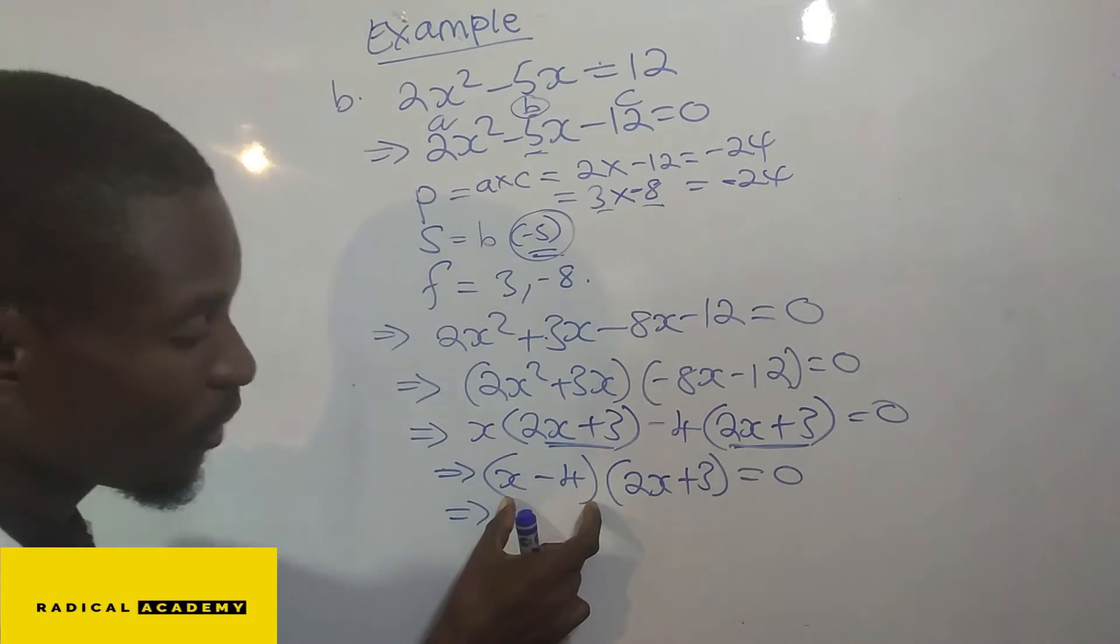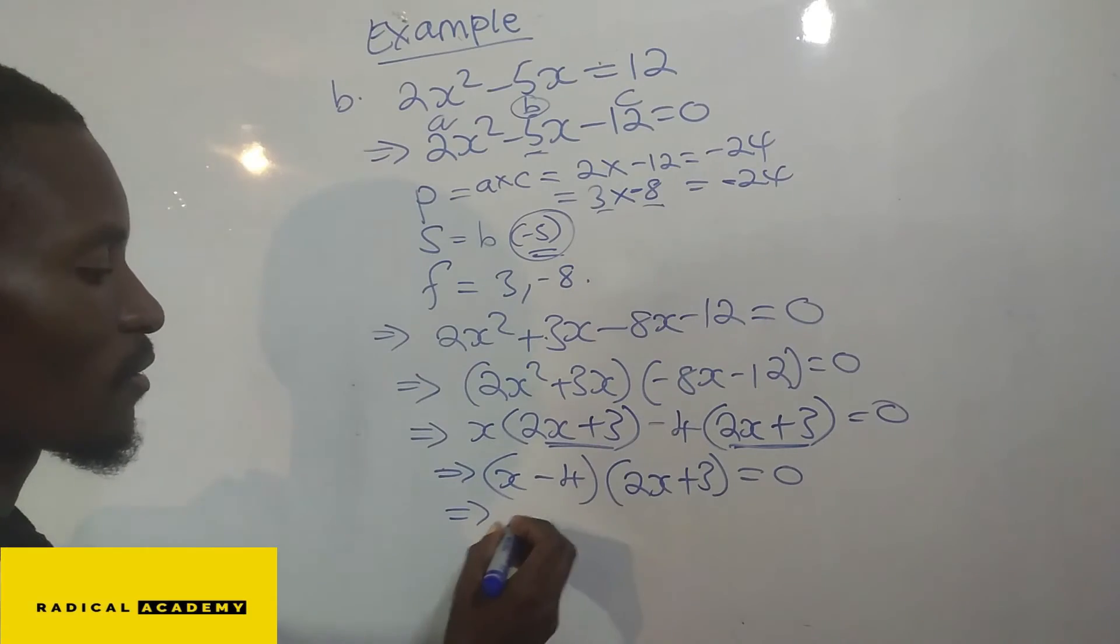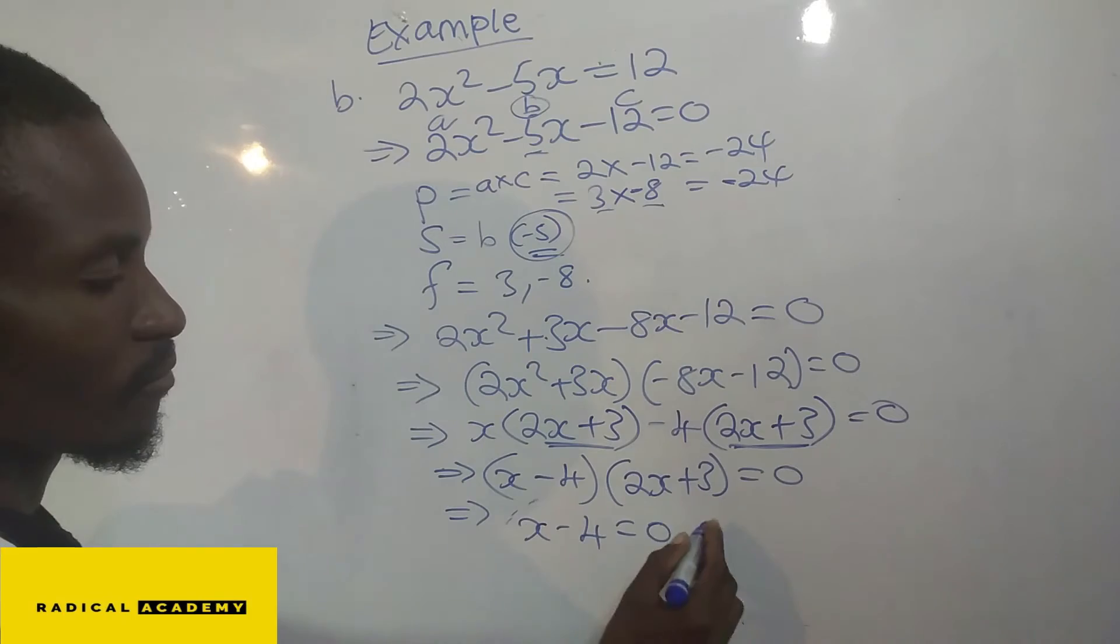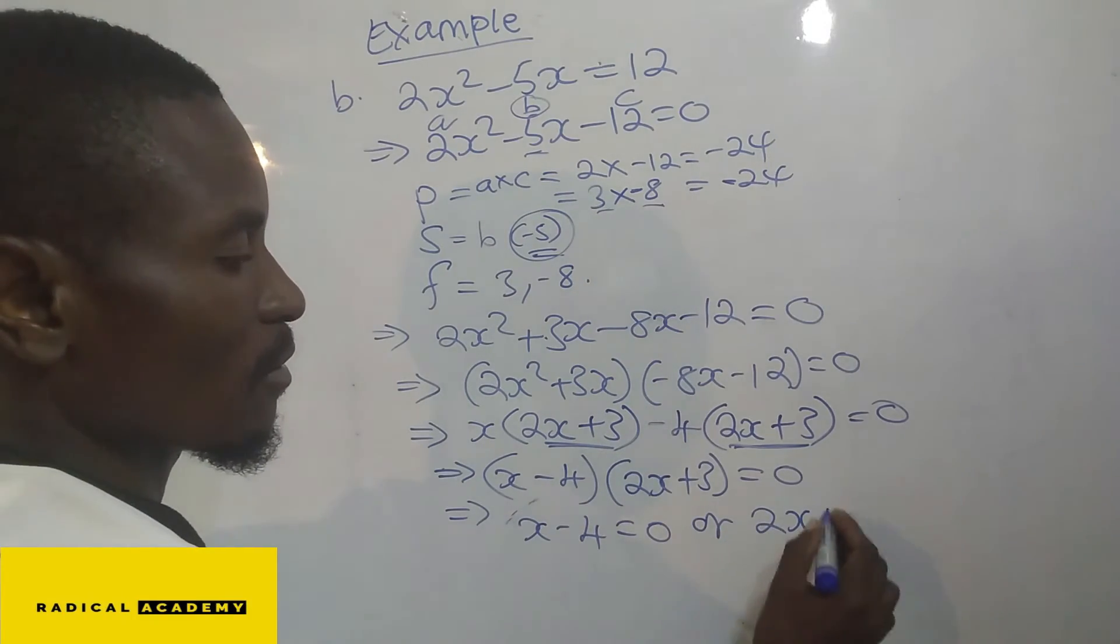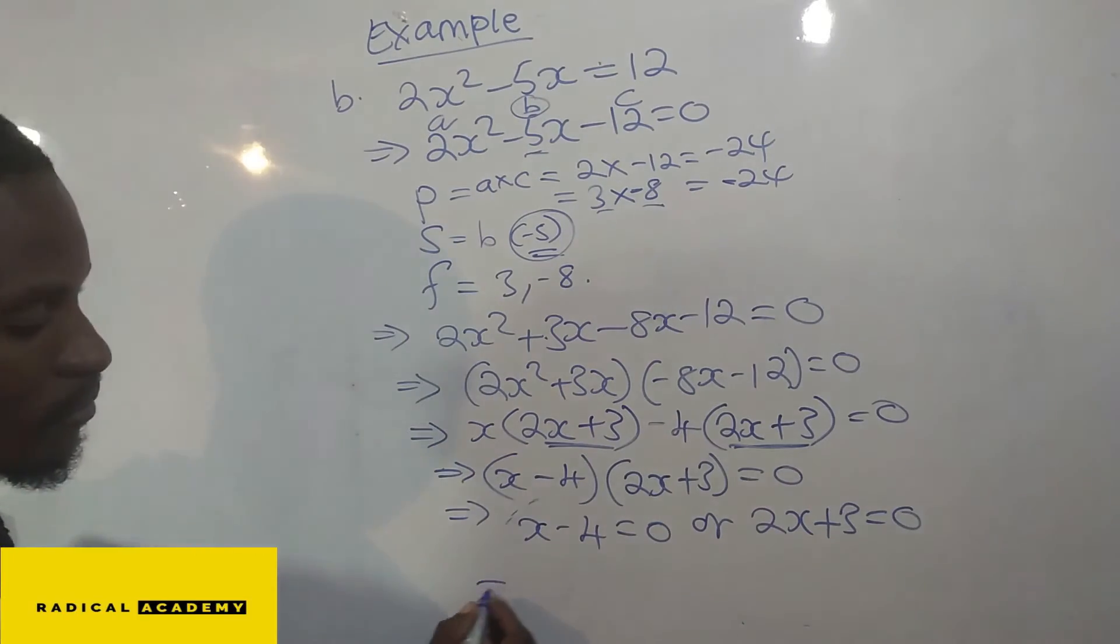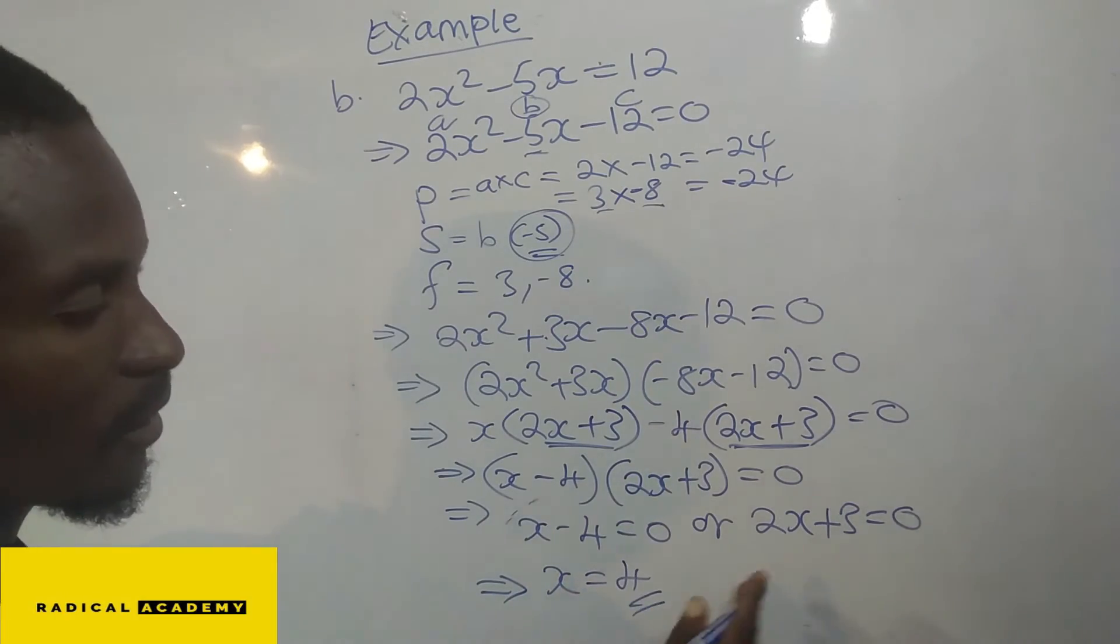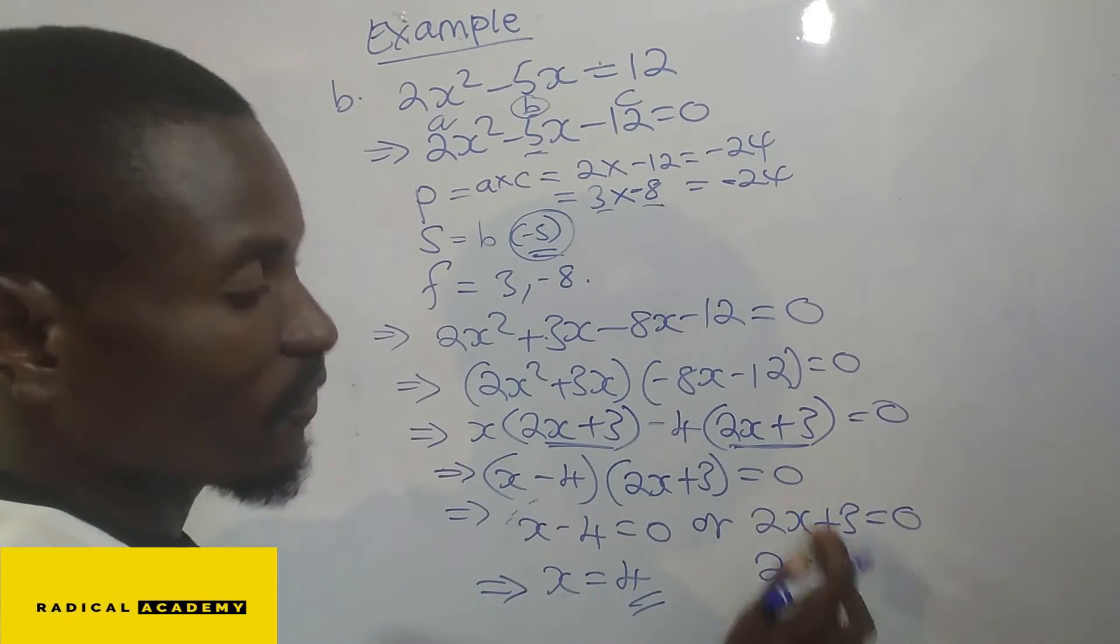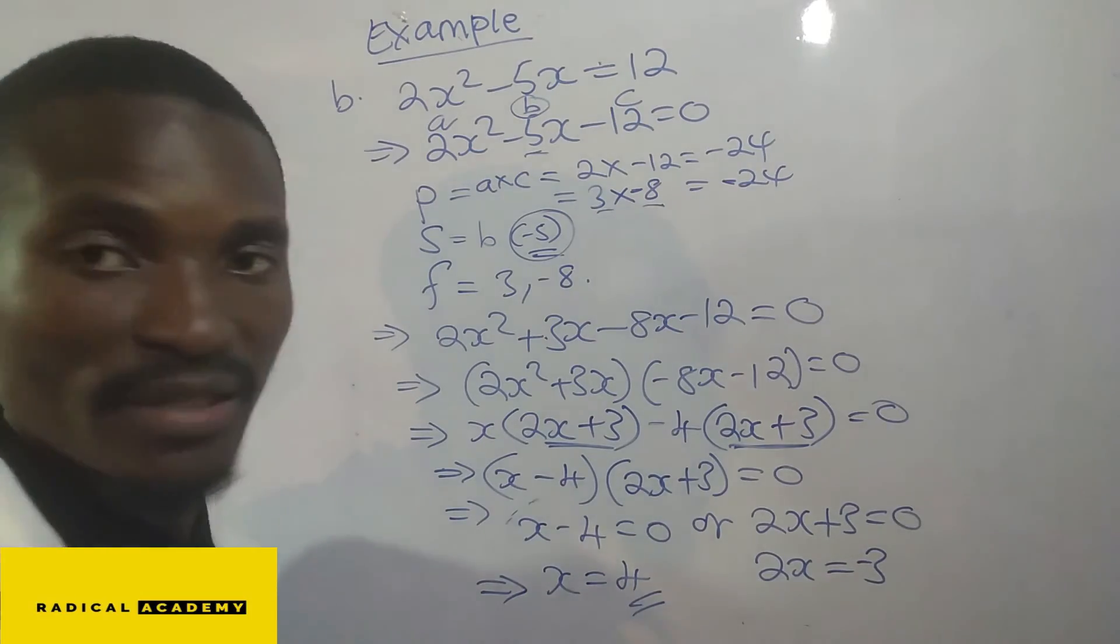So now you are going to equate each of the items in the brackets equals to 0. So from there now, x negative 4 go that side, so x equals to negative 4. And then this one, positive 3 will go to that side, so become negative 3.